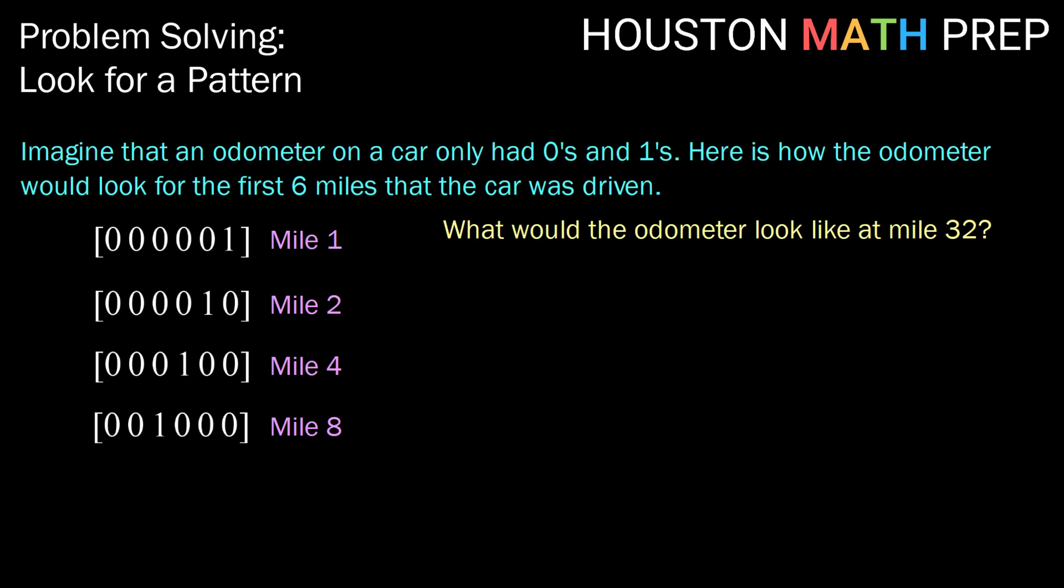So let's look at a pattern of when the ones jump. Notice that we got our first one in the far right hand location at mile one. At mile two, we got a one in the second spot. At mile four is when we got our one for the first time in the third spot. And as we just discovered, at mile eight is when we got our first one in the fourth spot. So looking at these mile markers, what do we notice about the pattern here? One, two, four, eight.